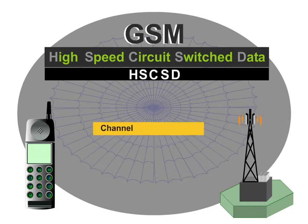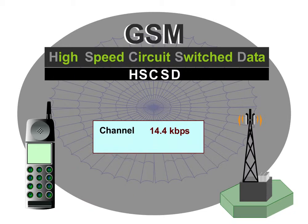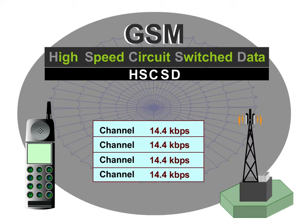Firstly, a new channel coding method, available in GSM Phase 2 Plus in single circuit switch data, increases the data rate from 9.6 kilobits per second to 14.4. Secondly, the bundling of up to four time slots can increase the user data rate to 57.6 kilobits per second.